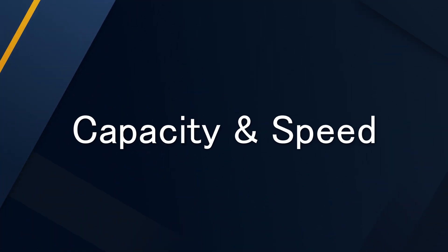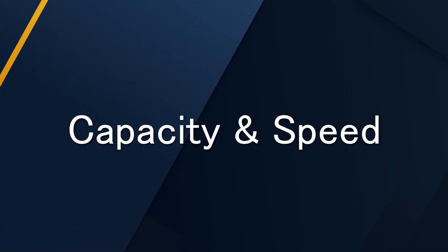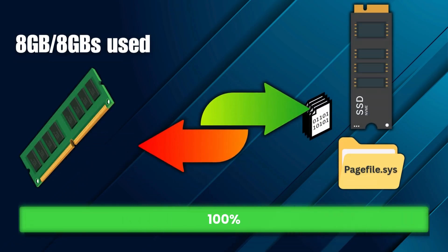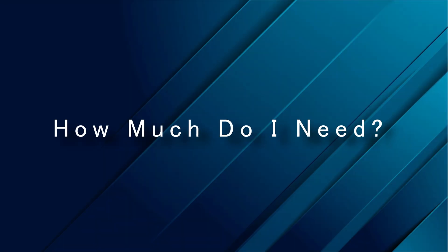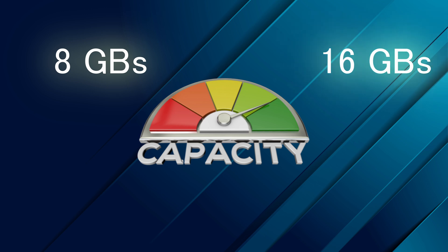Once you've confirmed what kind of RAM you need, you'll see two other big numbers on the box — capacity and speed. Capacity is the size of your workbench. If you run out of space, your computer is forced to swap data back to your slow storage drive in a temporary file, which causes stuttering and slowdowns when you have too much open. So how much do you need? 8GB is the bare minimum for light browsing. 16GB is the sweet spot for most users — perfect for gaming, productivity, and multitasking.